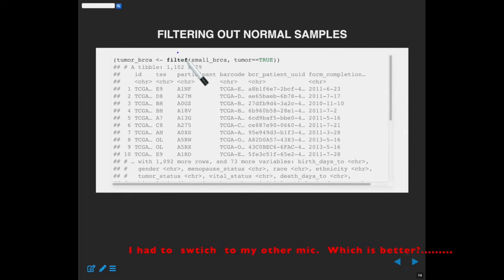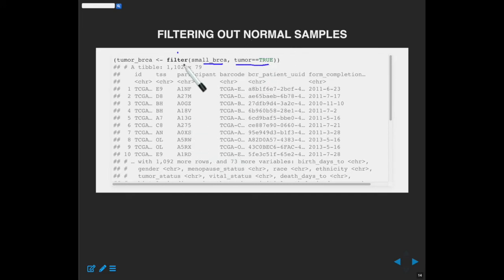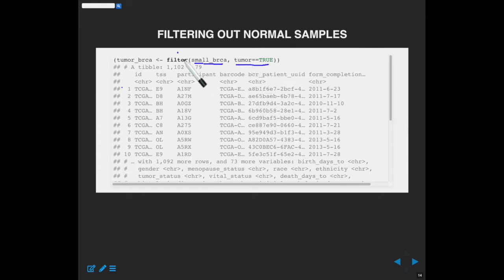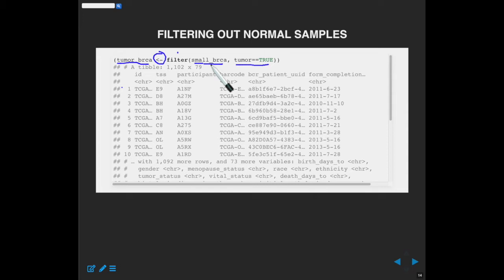The filter function takes two parameters: my original tibble small_BRCA, and a boolean condition. The basic idea is that filter keeps any sample where the tumor status is TRUE, and removes it if tumor equals FALSE. Filter goes through every row one by one, checks the status of tumor — if it's true, it's kept. I assign the result to a new tibble called tumor_BRCA. One nice tip: wrapping the expression in parentheses causes R to print the result to the screen automatically.